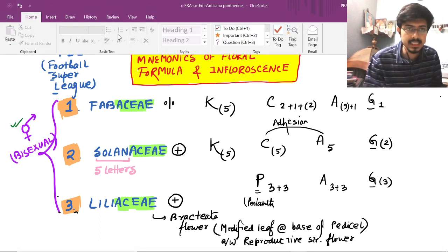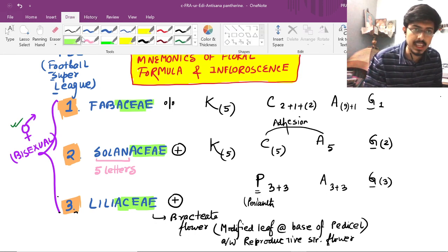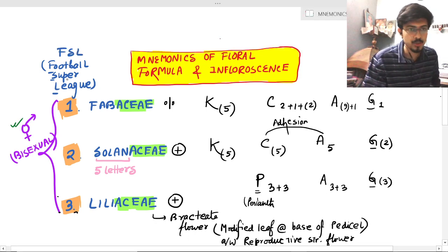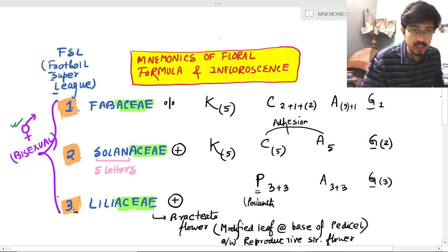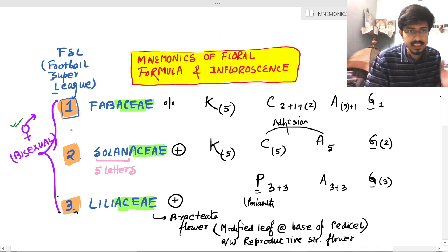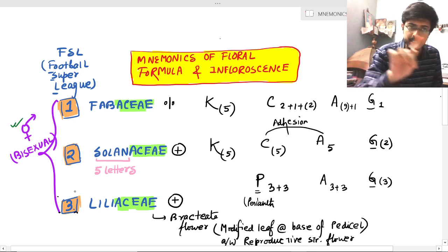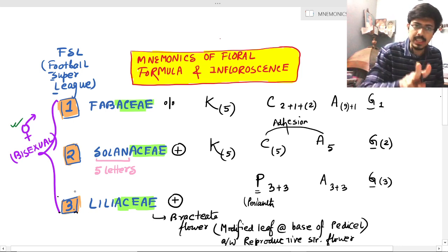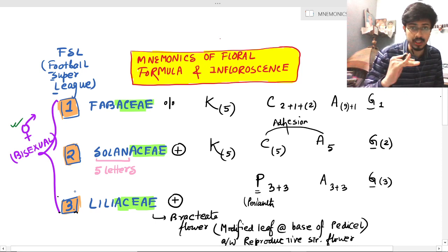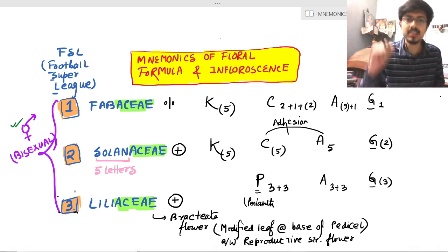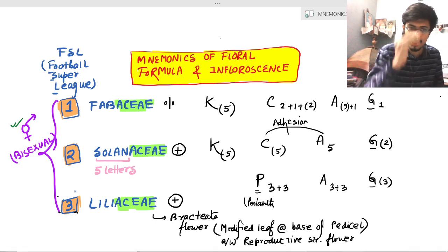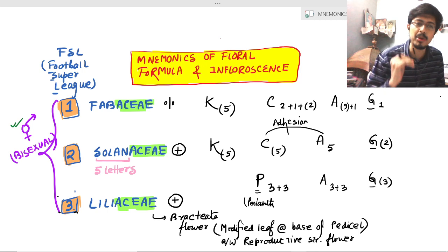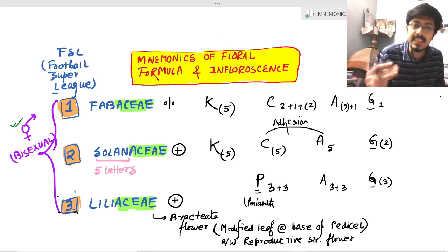The mnemonic is FASL — F-A-S-L — Football Super League. You have to arrange this in order: one, two, and three. First is F for Fabaceae, second is S for Solanaceae, and third is L for Liliaceae. This order is very important because through this order we can build up the mnemonics.